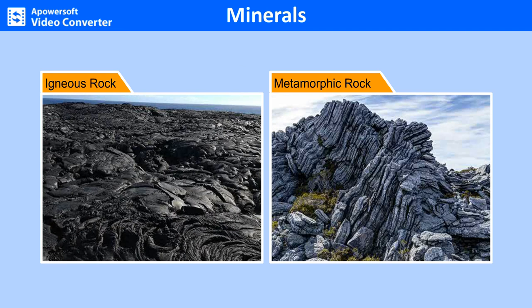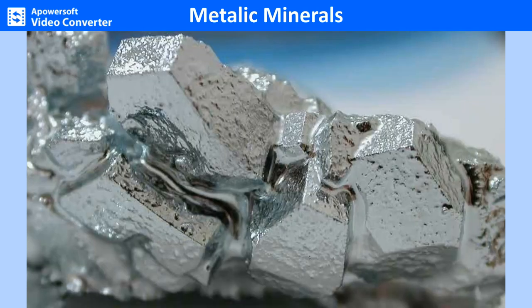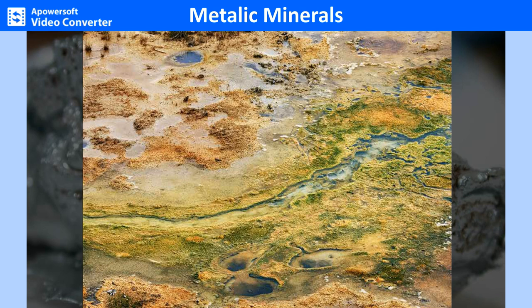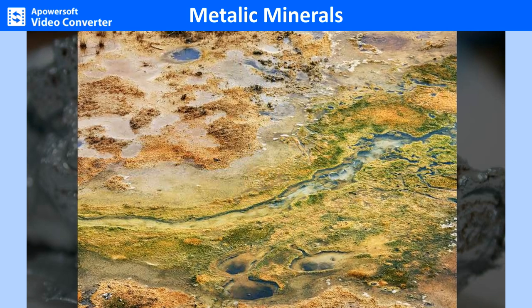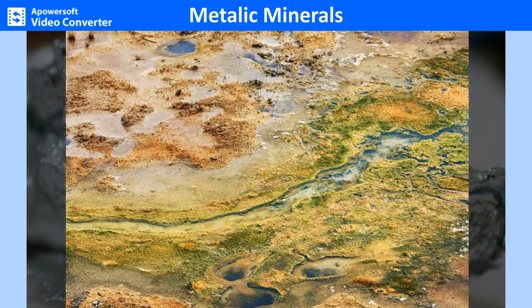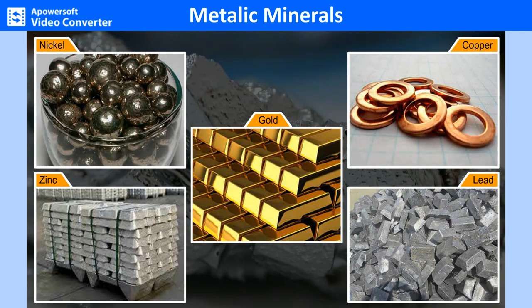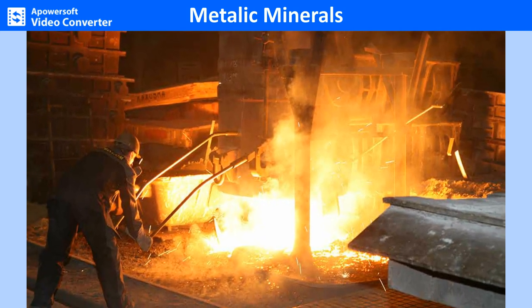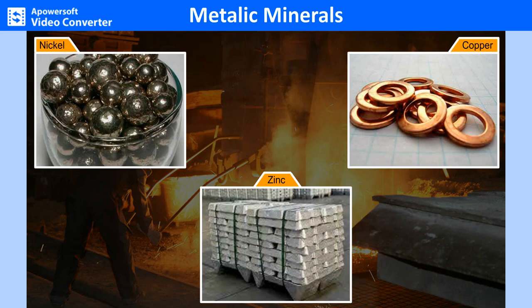On the basis of their composition, minerals are classified into metallic and non-metallic minerals. Metallic minerals are minerals that contain one or more metallic elements. They occur in rare, naturally formed concentrations known as mineral deposits, which can contain valuable metals such as nickel, copper, zinc, lead and gold. Metallic minerals are chemically processed to extract the useful metals contained therein. Metals such as nickel, copper and zinc are important since they are used for numerous purposes.